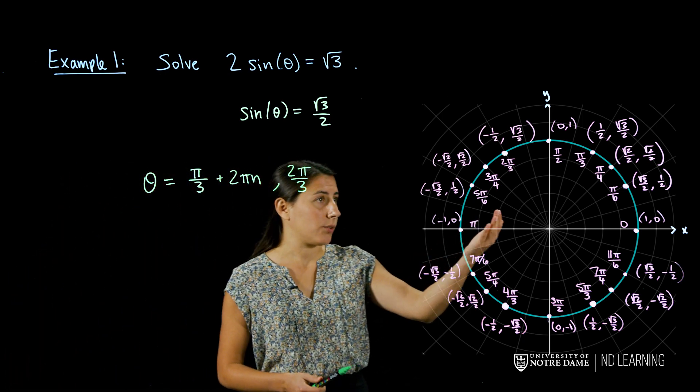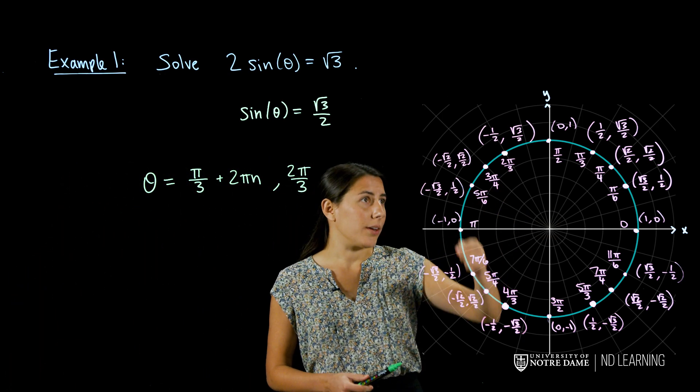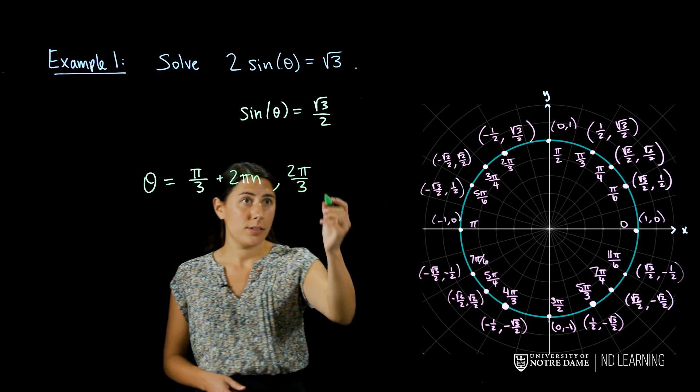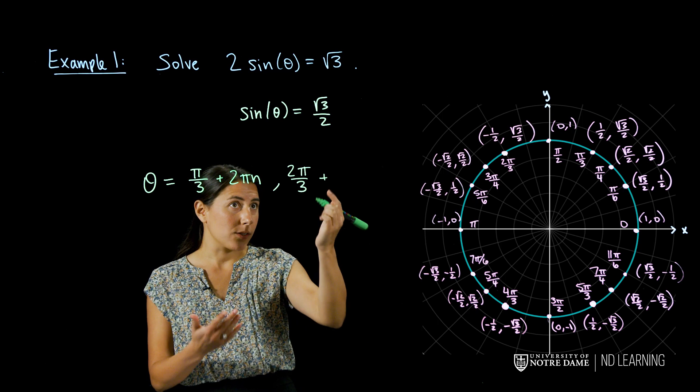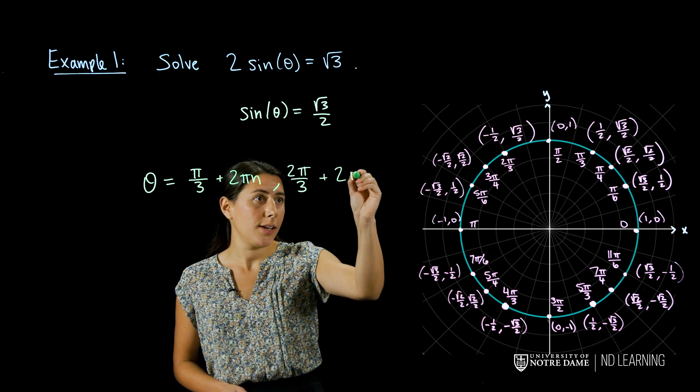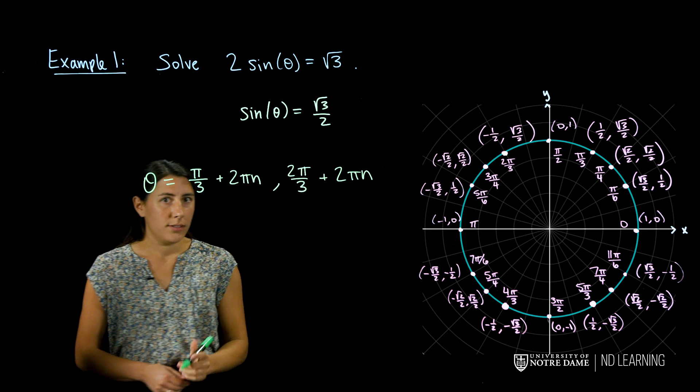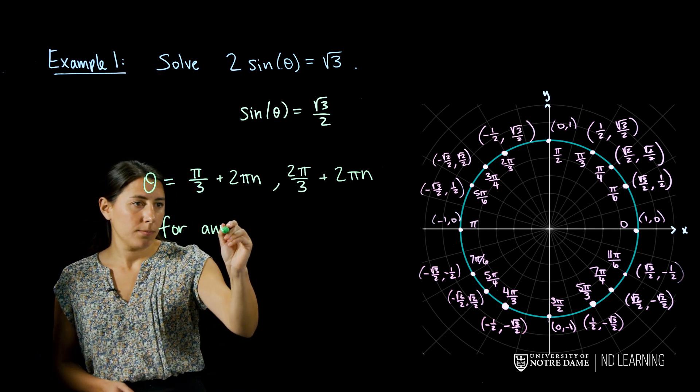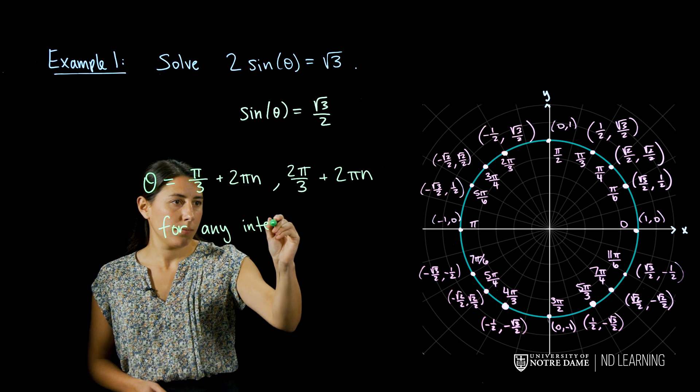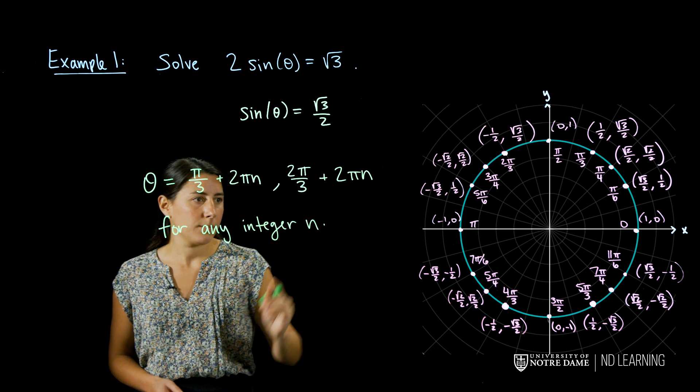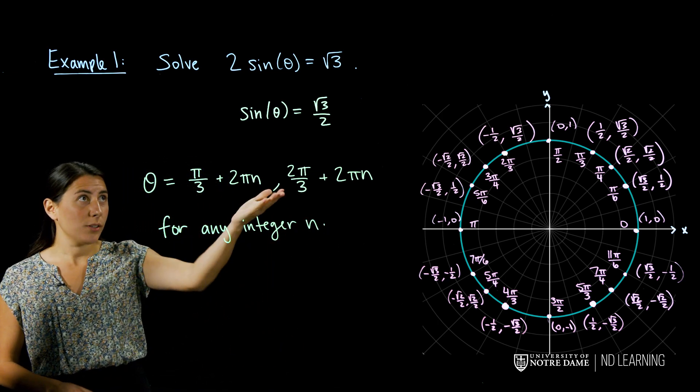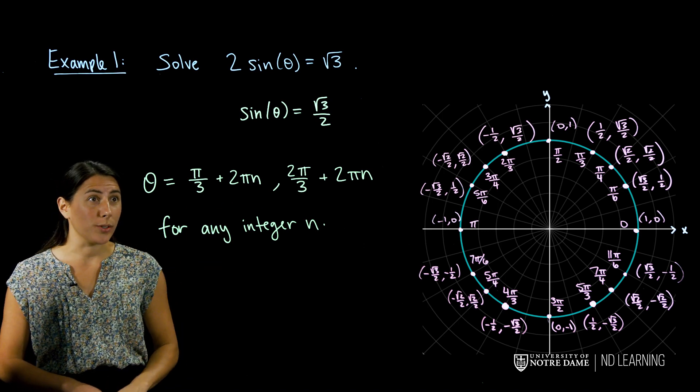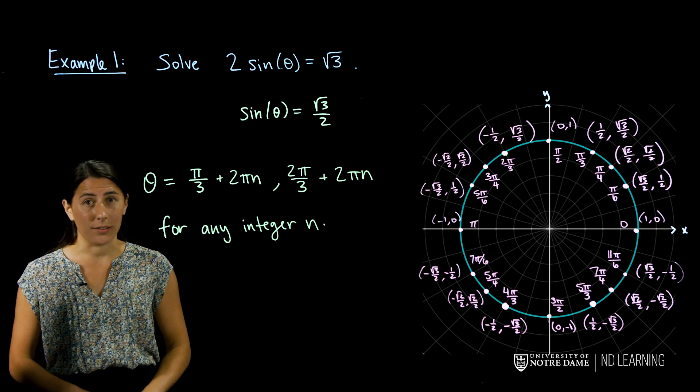In a similar way for the angle 2 pi over 3, if we went all the way around the unit circle and then 2 pi over 3, we would have the same y value. So we want all angles 2 pi over 3 plus any multiple of 2 pi. So here this is true for any integer n. The angles that satisfy this trigonometric equation are any 2 pi multiples of pi over 3 and 2 pi over 3.